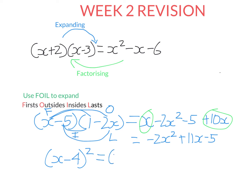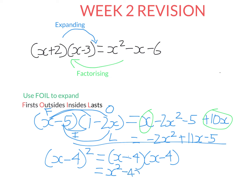Sometimes you'll be asked to expand something like this — X minus four squared. Remember, squaring means you multiply something by itself. So here we're multiplying X minus four by itself, and we can use FOIL just like we did for the previous question. F: X times X is X squared. O: X times negative four is negative four X. I: negative four times X is also negative four X. L: negative four times negative four is positive 16. So we look for like terms — negative four X and negative four X combine to give negative eight X. We leave the X squared and 16 alone. And then we're done.